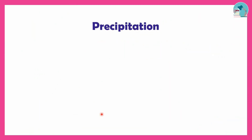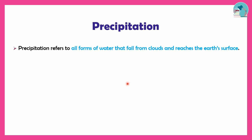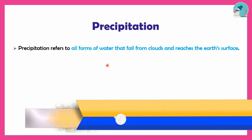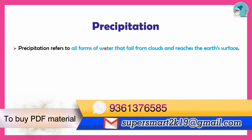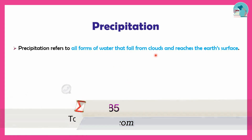First, we have the components of the water cycle. We will show you the components of the water cycle. The third component is precipitation. Precipitation is a form of water; it will fall on the earth's surface.